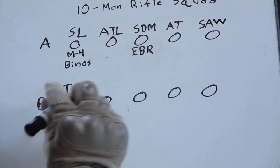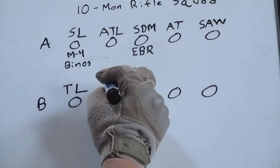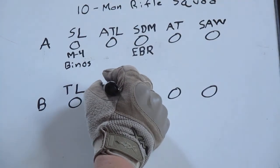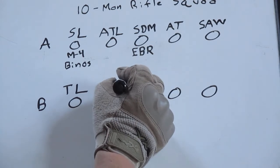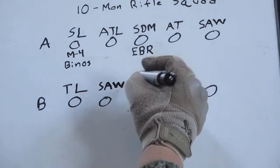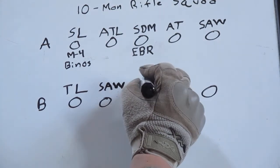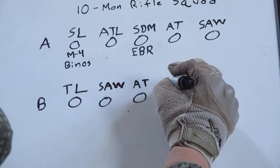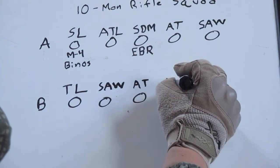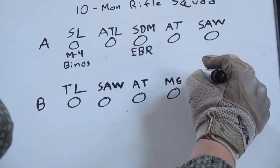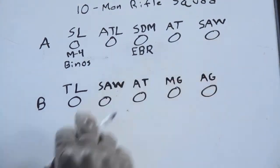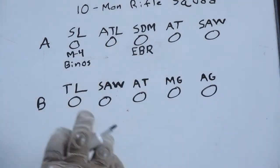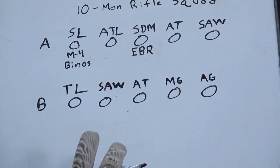In your Bravo team you have your team leader, you'll have your saw gunner or squad automatic rifleman, you'll have another anti-tank gunner, you'll have a machine gunner, and you'll have his assistant gunner.